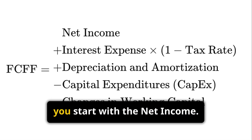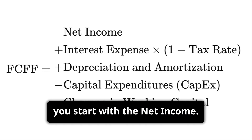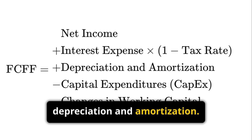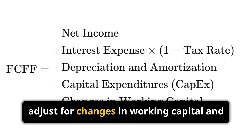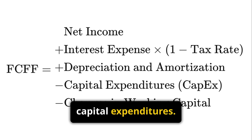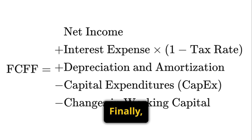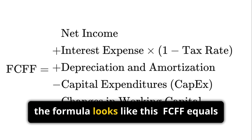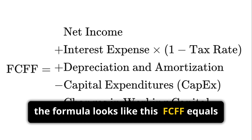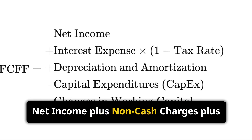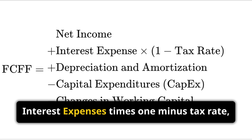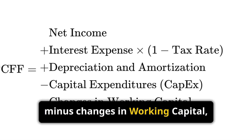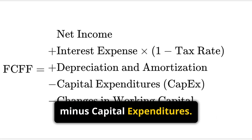To calculate FCFF, you start with net income. Add back non-cash charges like depreciation and amortization. Then, adjust for changes in working capital and capital expenditures. Finally, add back interest expenses after tax. So the formula looks like this: FCFF equals net income plus non-cash charges plus interest expenses times (1 minus tax rate) minus changes in working capital minus capital expenditures.